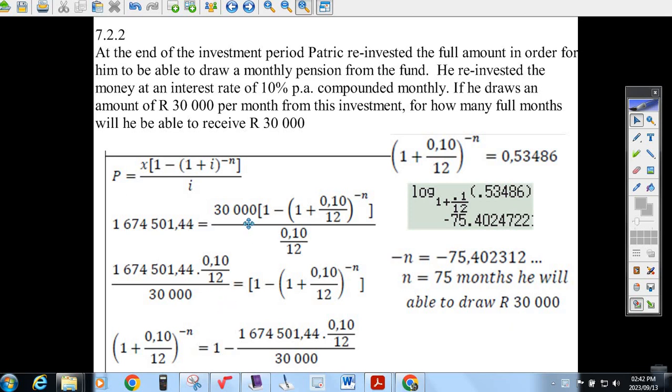Okay, now we're going to try the one where you've got to use present value. It says at the end of the investment period, Patrick puts the entire amount of money into the bank, and he kind of gives a loan to himself. He's going to withdraw a monthly pension from the fund.